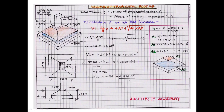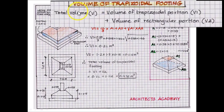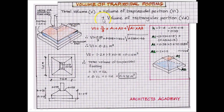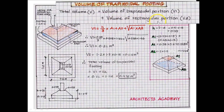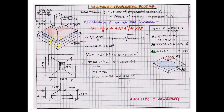Now with this data, let us calculate the volume of the trapezoidal footing. To calculate the total volume, we will calculate the volume of the trapezoidal part, which is V1, plus the volume of the rectangular part, which is V2. These are the two parts of the footing that we will add together.